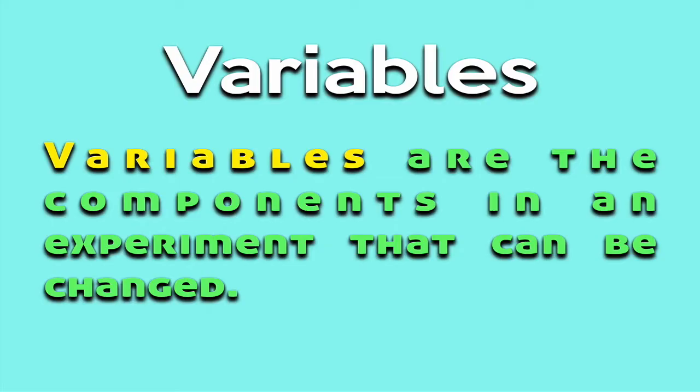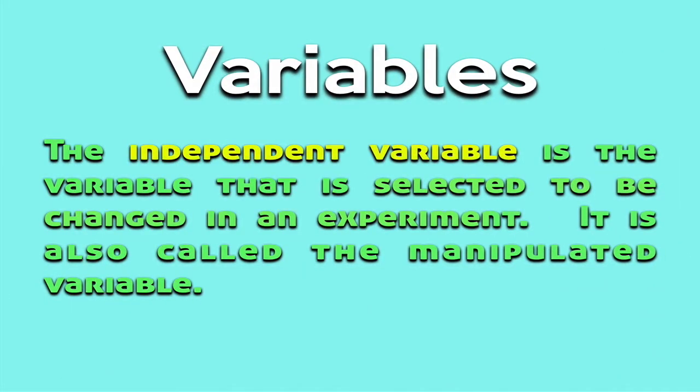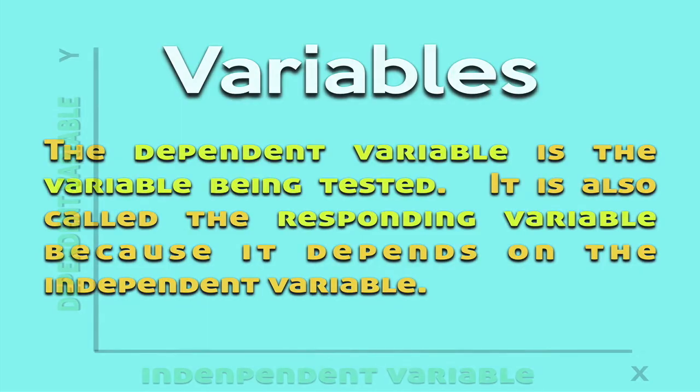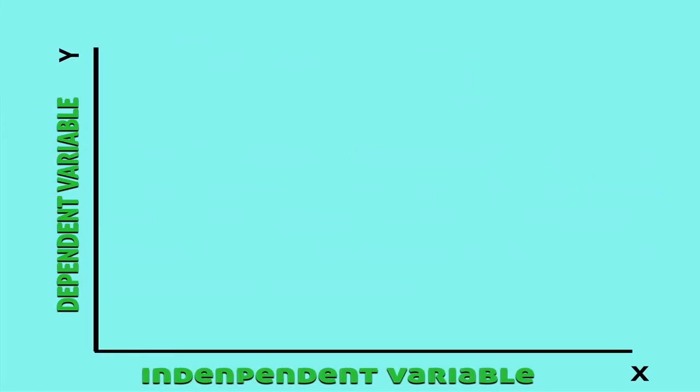There are really two variables that we'll be looking at in this video. The first is the independent variable. That's the variable that is selected to be changed in an experiment. We can also call it the manipulated variable because we're choosing to change it. The other variable is called the dependent variable. This variable is being tested. It depends on the other variable. So we also call it the responding variable because it's a response to whatever change we make in the manipulated variable. On a set of axes, the x-axis would have the independent variable and the y-axis has the dependent variable.